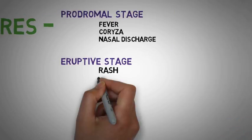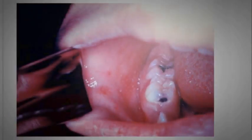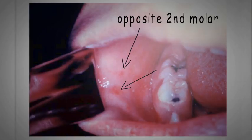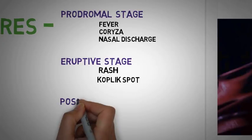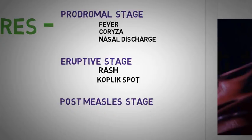In the eruptive stage, Koplik spots also occur. They are the characteristic sign of measles and occur in the buccal mucosa opposite the second molar tooth. Finally, there is the post-measles stage, which is characterized by weight loss and diarrhea.